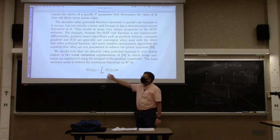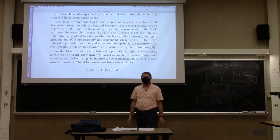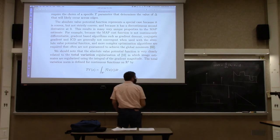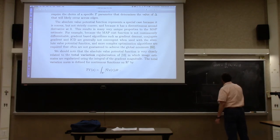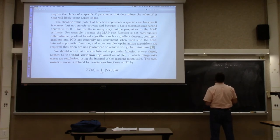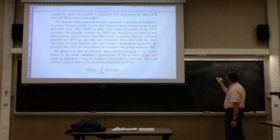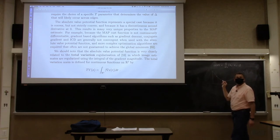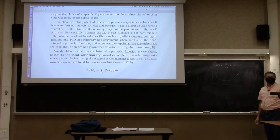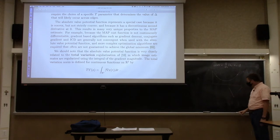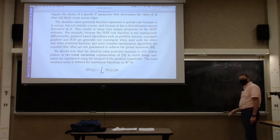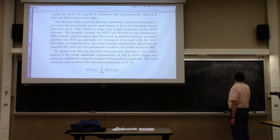This total variation function is convex. A function is convex if whenever you draw a line between two points, the line lies above the function. So for points A and B on the curve, lambda times F(A) plus (1 minus lambda) times F(B) is greater than or equal to F(lambda A plus (1 minus lambda) B) for all lambda in [0,1].